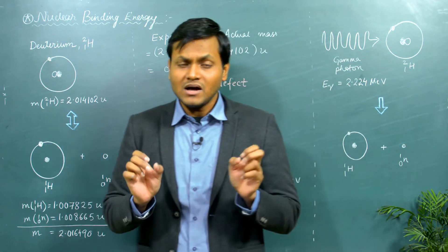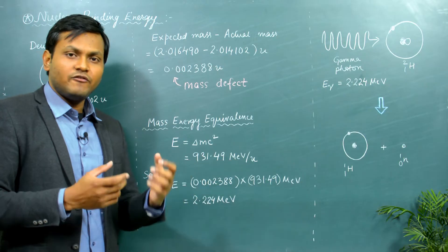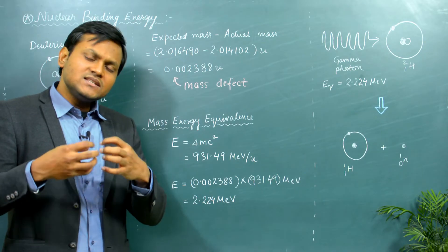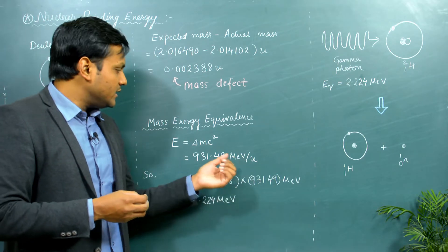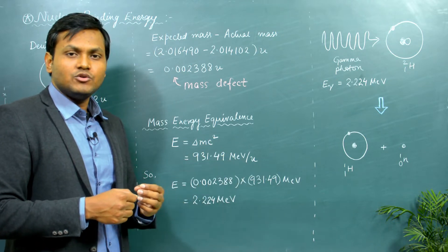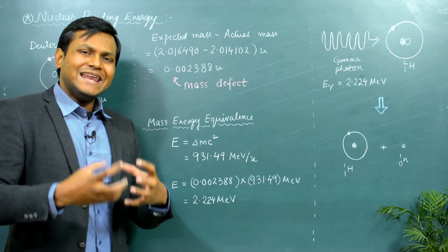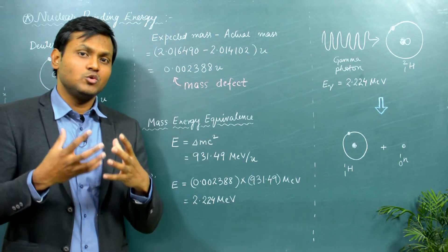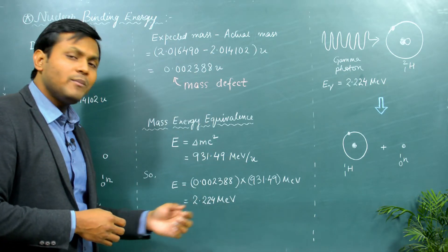How can we relate energy with mass? The relationship between energy and mass is given by Einstein's mass-energy equivalence formula: E = mc². Since we are dealing with atomic mass units, we can convert SI units to atomic mass units. For one atomic mass unit, the corresponding energy comes out to be around 931.49 mega electron volts. So if I multiply 931.49 by this amount of mass defect, the total amount of energy comes out to be 2.224 mega electron volts.